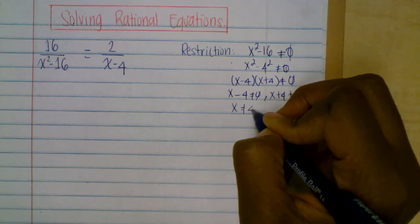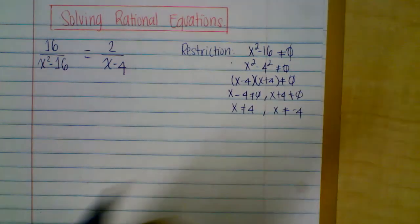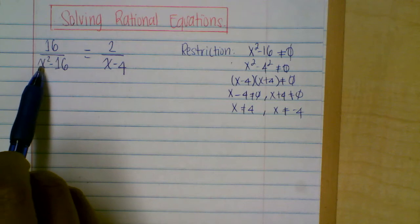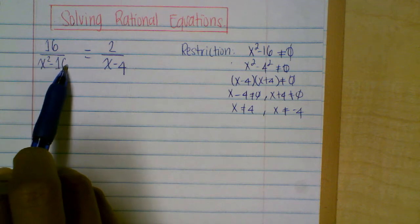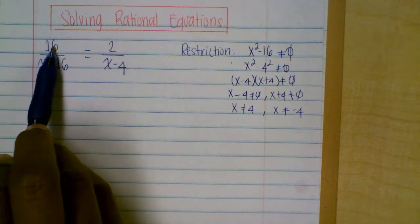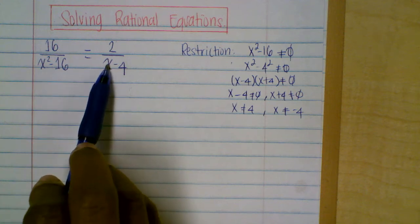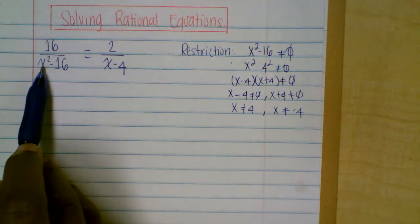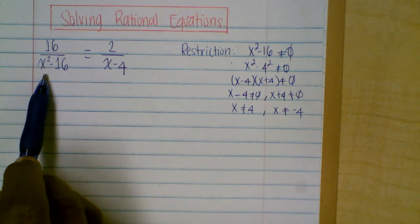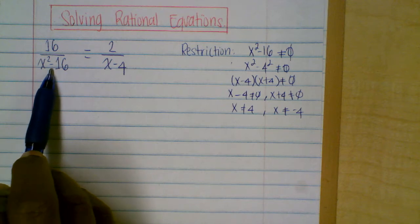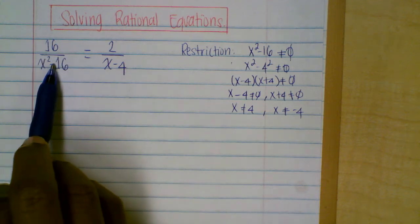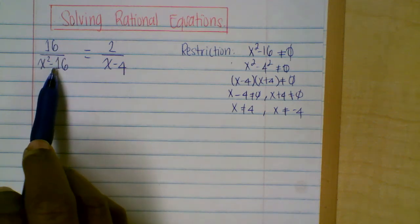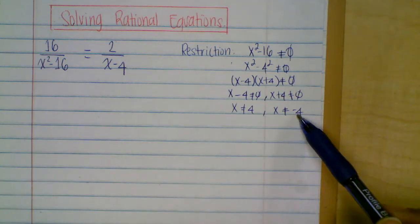Here, x cannot be equal to positive four, and x cannot be equal to negative four. Why? If you plug in positive four, four squared is 16, and 16 minus 16 is zero. You cannot have a number divided by zero. The same is true for negative four — negative four squared is still positive 16, and 16 minus 16 is again zero. So you need to remove positive four and negative four from the domain.